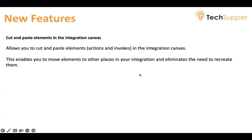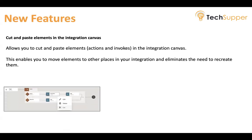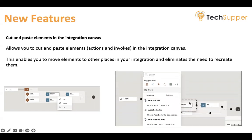This enables you to move elements to other places in your integration and eliminates the need to recreate them. For example, to cut a notification action, click the three dots and click Cut. When you click Cut, you will see the plus symbol will be activated. Click on the plus symbol, right-click, and then paste it. Wherever you want to paste, you can do so — but you cannot paste before the trigger or before the end.